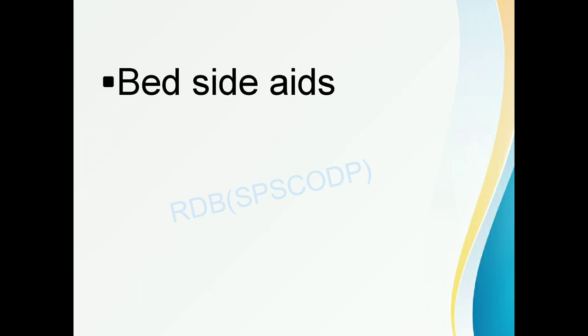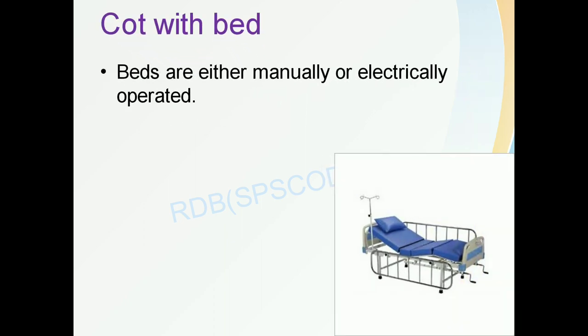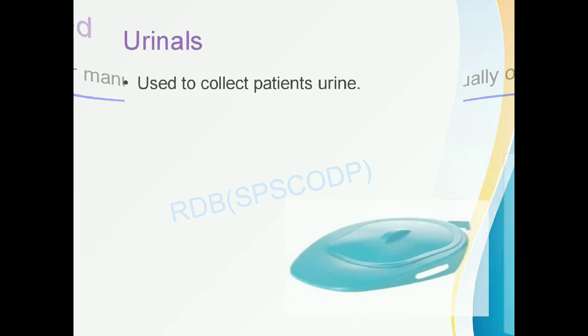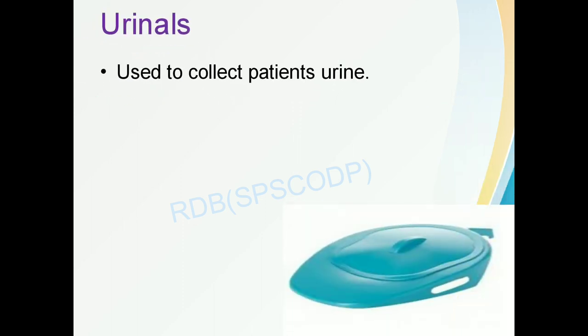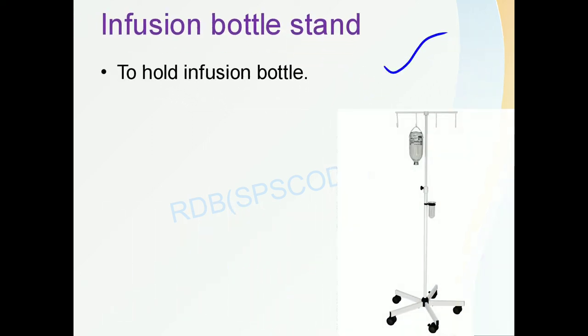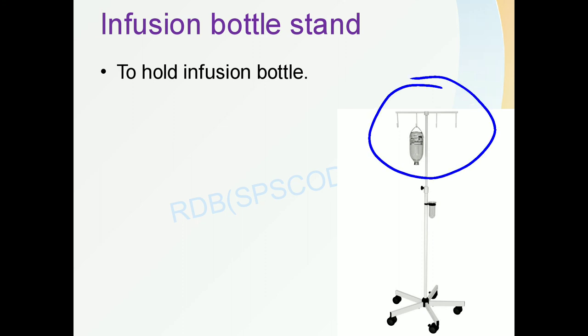Bedside aides include hospital beds, which are manually or electrically operated. Urinals are pots used to collect a patient's urine when the patient is unable to walk. Infusion bottle stands are used for holding infusion bottles. Bedside cabinets are used for storage of medicines and medical records.